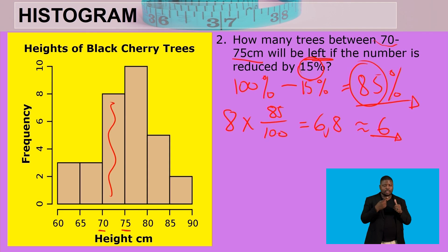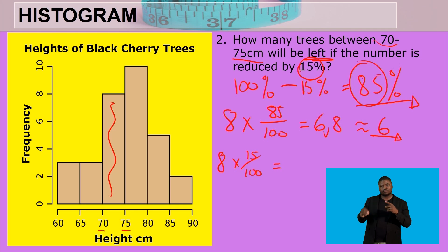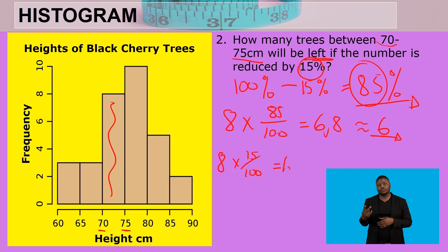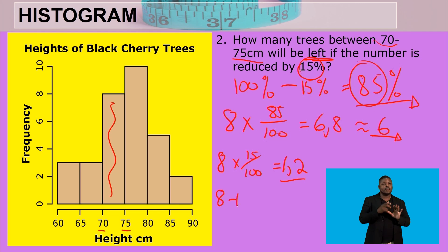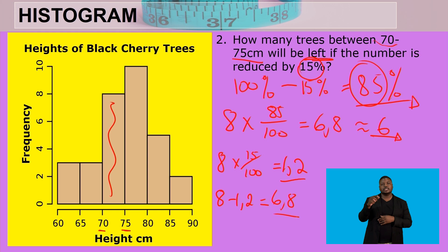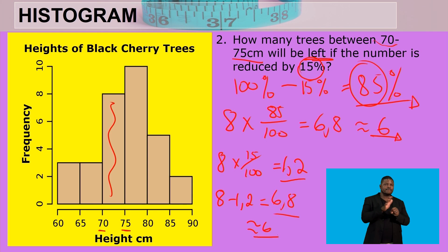An alternative method: calculate 15% of 8, which is 8 multiplied by 15 over 100, giving 1.2. Then subtract: 8 minus 1.2 equals 6.8. Again, since we cannot have a fraction of a tree, the answer rounds down to 6 trees.